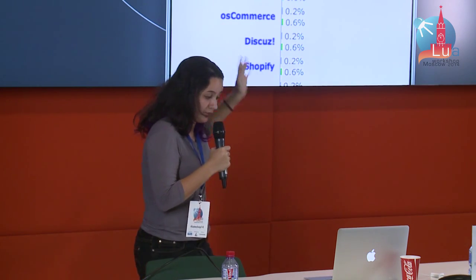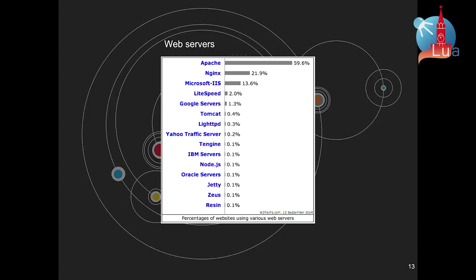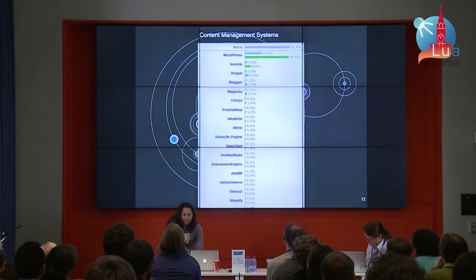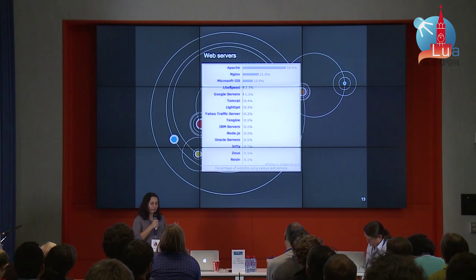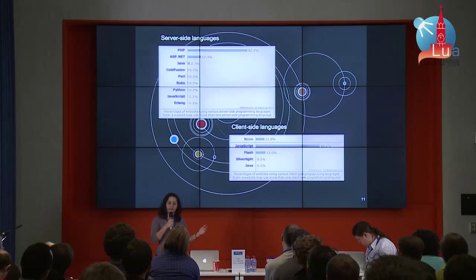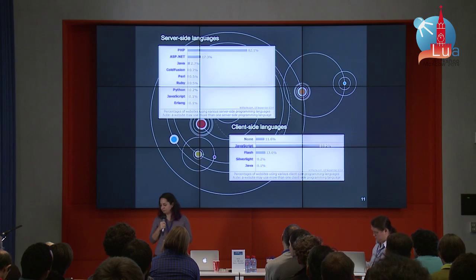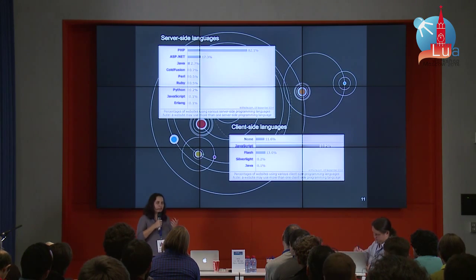When we talk about frameworks and content management systems, it's pretty much the same. Of all websites in the world, 62% don't use anything. 33% use WordPress, which accounts for 60% of all websites that use some kind of content management system — and WordPress is developed in PHP. As for web servers, the most used one is Apache, followed by Nginx. Why are these technologies the most used? It's not really because they are the best, but because they are the easiest to use.